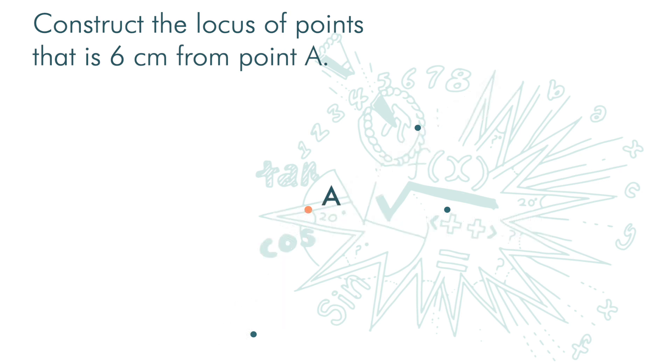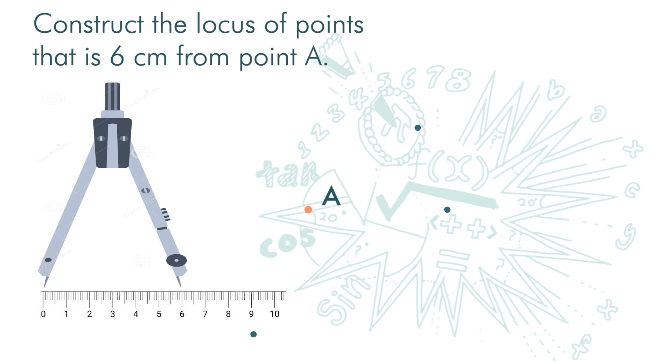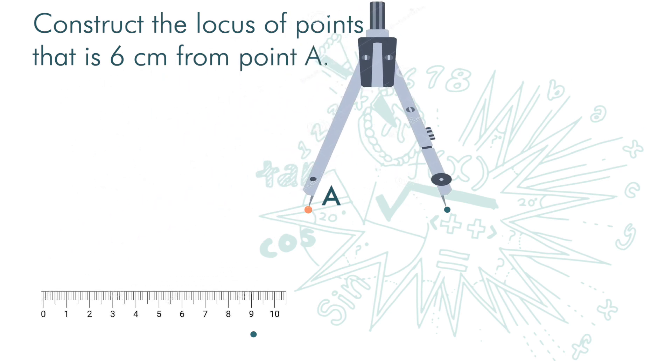The best way to get the locus is to use a compass. Open up the legs of the compass, measure six centimeters on a ruler, place the sharp end at point A, and then draw a circle.